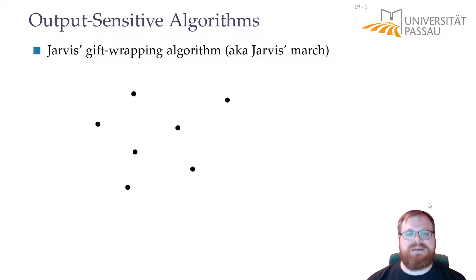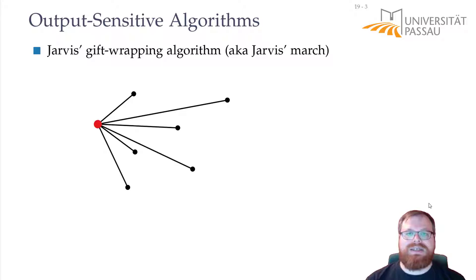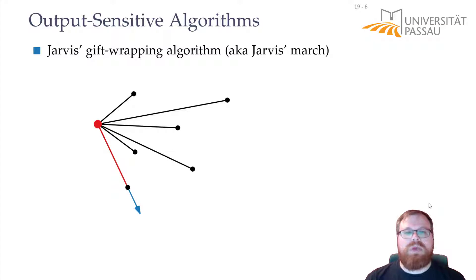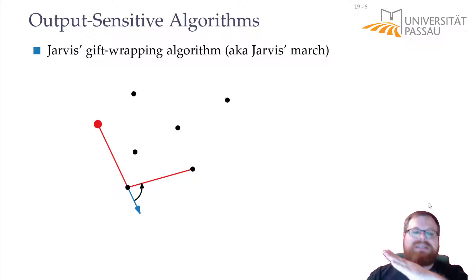The description of this algorithm is very simple. We start with the leftmost vertex, and we know that all the other vertices lie to the right of it. So we take a vertical ray directed downwards and simply rotate it until we hit the next vertex. From that one, we continue — we take the ray from the previous edge and keep rotating it until we hit the next vertex.